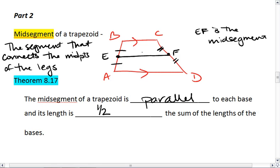So what we find out is that EF is parallel to AD and BC. Also, EF equals 1/2 of AD plus BC.